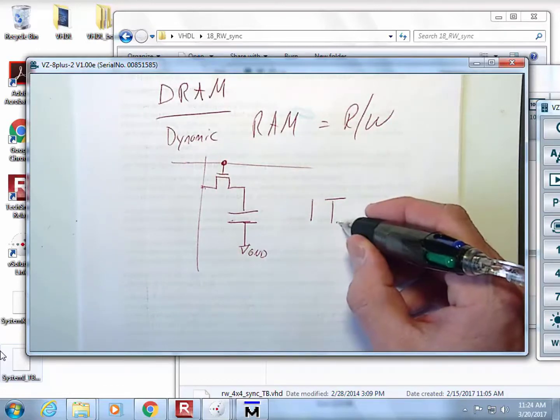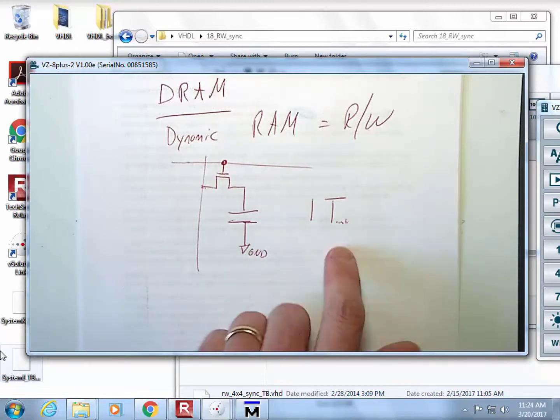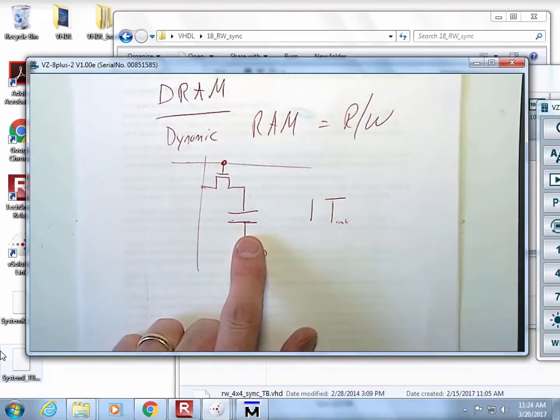This is referred to as a 1T cell. Now, since you can do it with one transistor, it's very small. You got a capacitor in there now. There are companies such as Micron and all these other manufacturers of DRAM, they have figured out very clever ways to make capacitors.